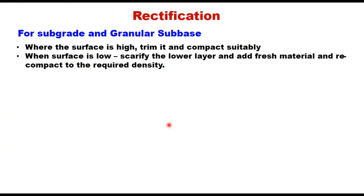If irregularity in a layer is noticed more than the permissible limit, then it must be rectified. MORTH specifications have suggested the rectification procedure for different layers. For subgrade and granular base: where the surface is high, trim it and compact suitably — the degree of compaction and type of material to be used will be as per original construction. When the surface is low, scarify the lower layer, add fresh material, and recompact to the required density.